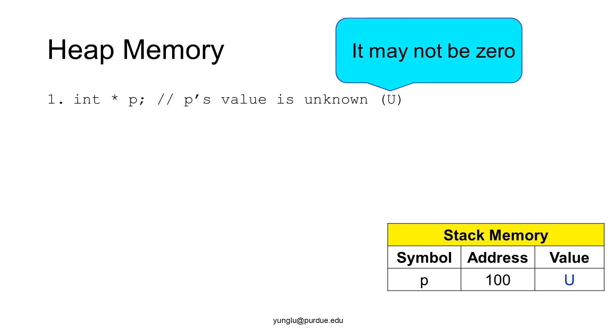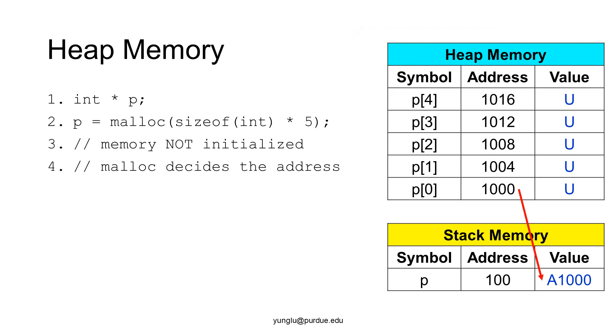The next step calls malloc. The malloc function returns an address in the heap memory. Suppose malloc returns address one thousand, one thousand is written to the value of p. Please notice that the elements are not initialized. Thus, we put u to the elements.